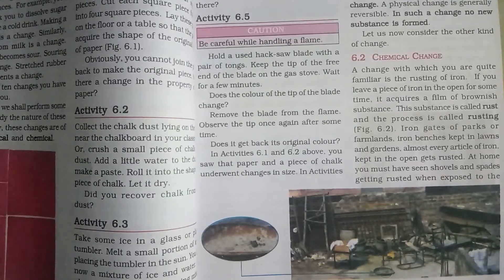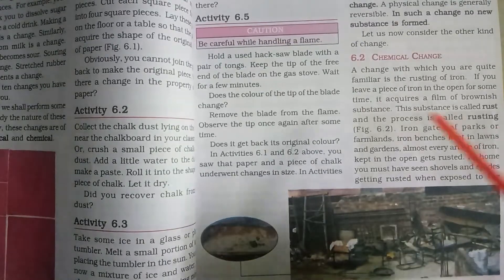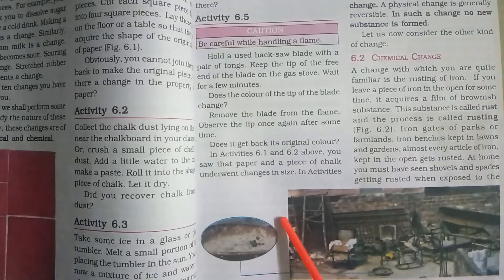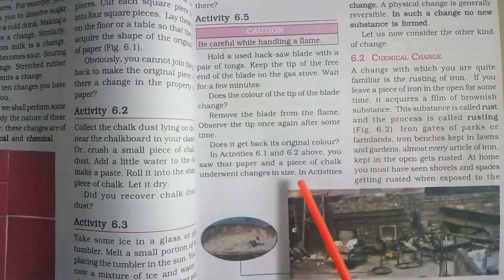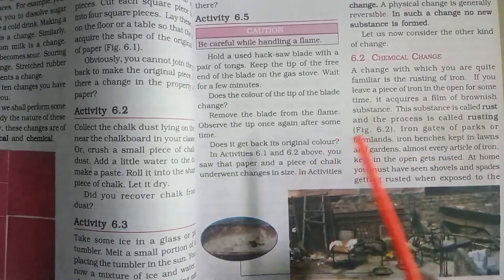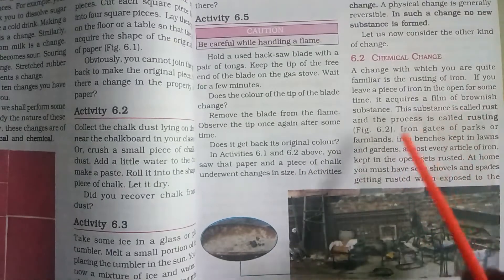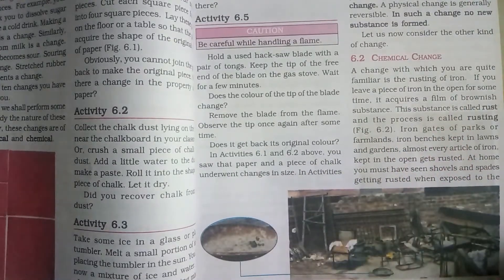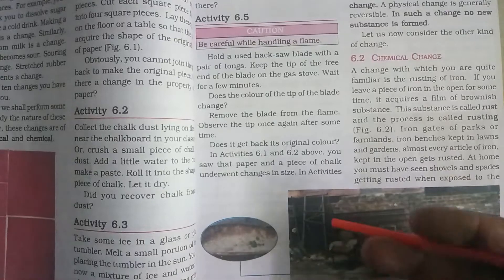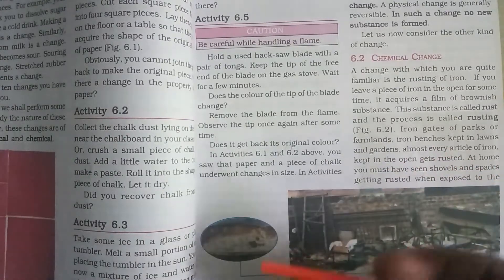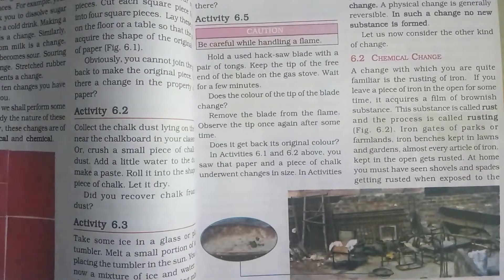In this session children, let us try to know what is chemical change. We have a simple activity here. We are supposed to take a metal item. It can be made up of iron or copper or zinc or whatever it is.